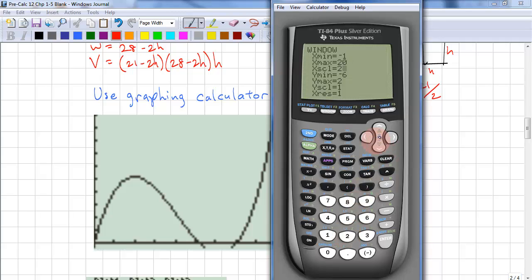We'll set the scale to 2. And again, we don't need to go below 0, but we'll leave it at negative 6. Our max, we'll set it at 1500. And we'll do roughly 10% of that, so 100. And graph.